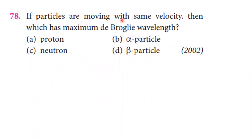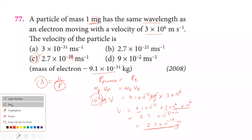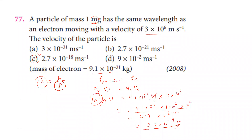If particles are moving with the same velocity, which has the maximum de Broglie wavelength? The answer corresponds to 10 to the power minus 18.